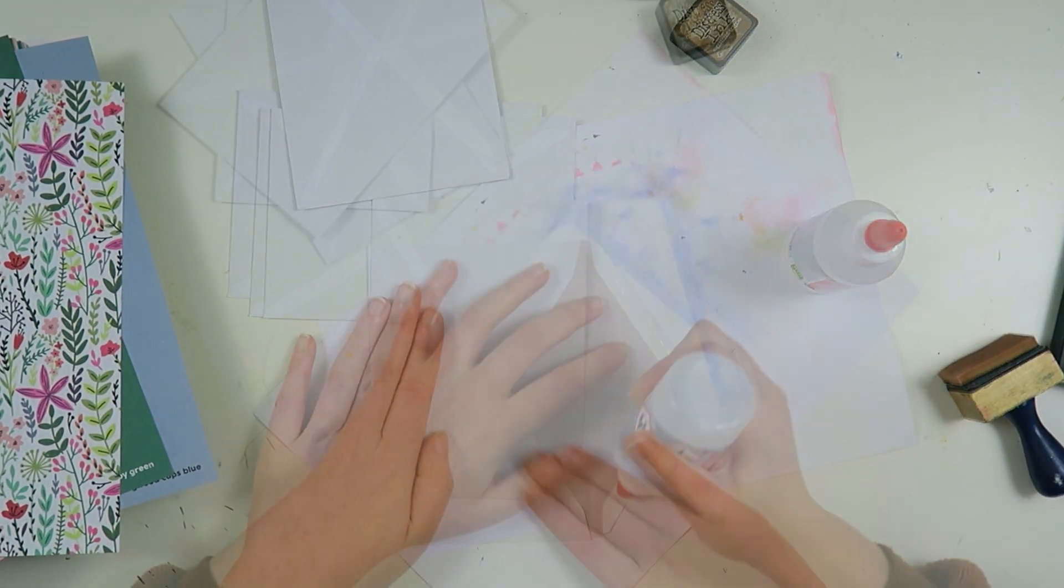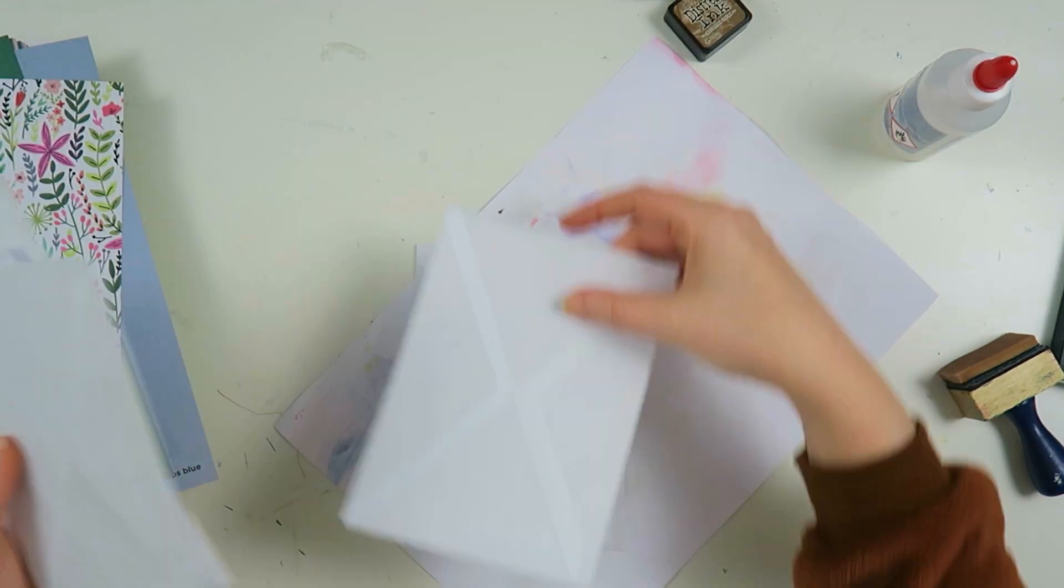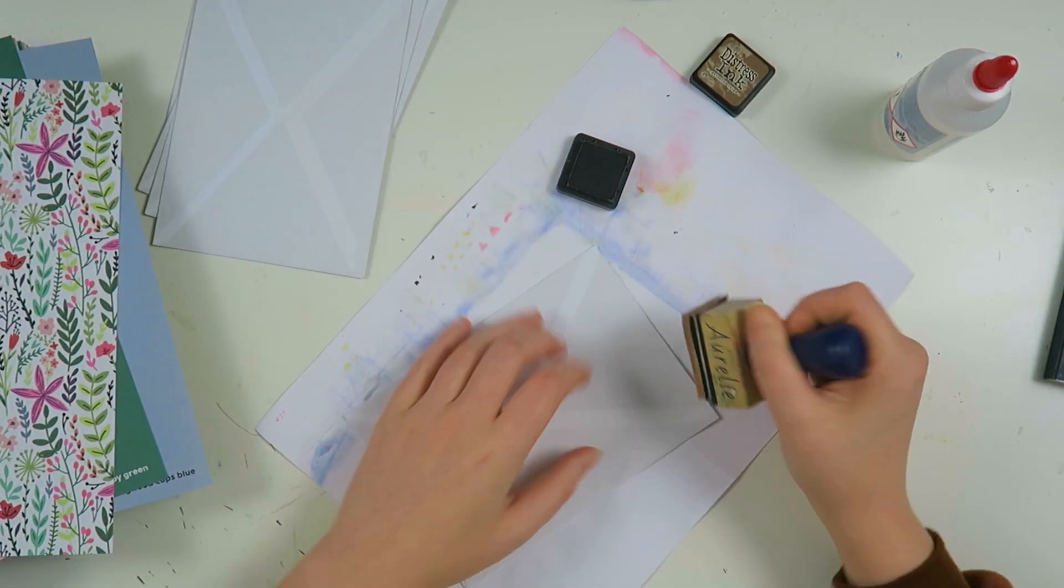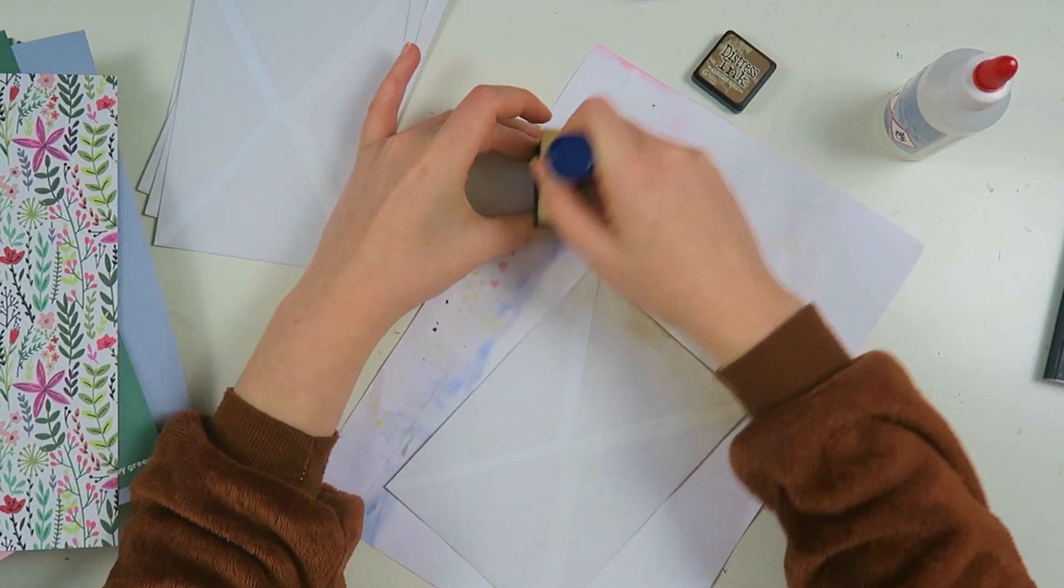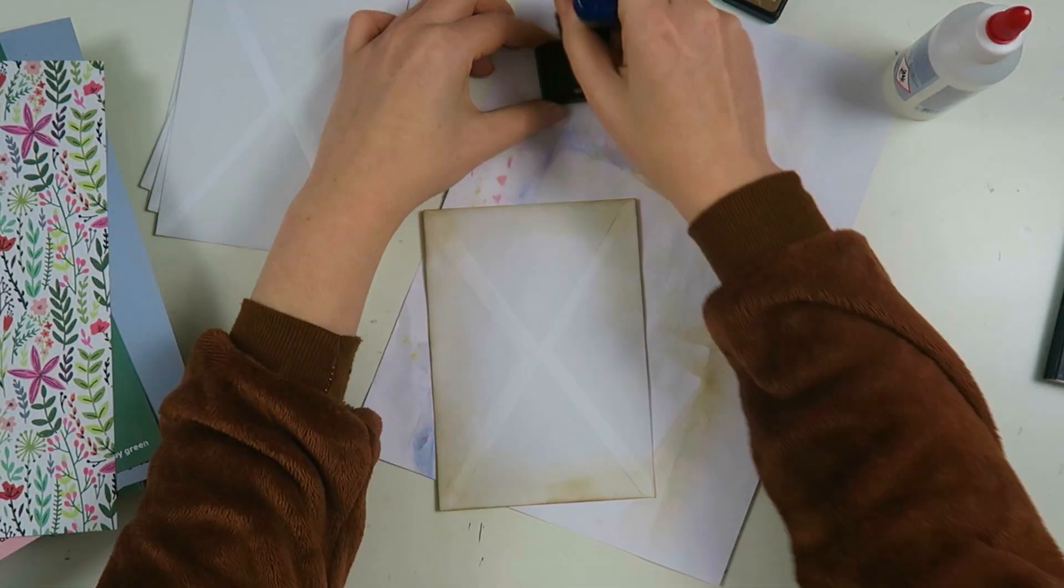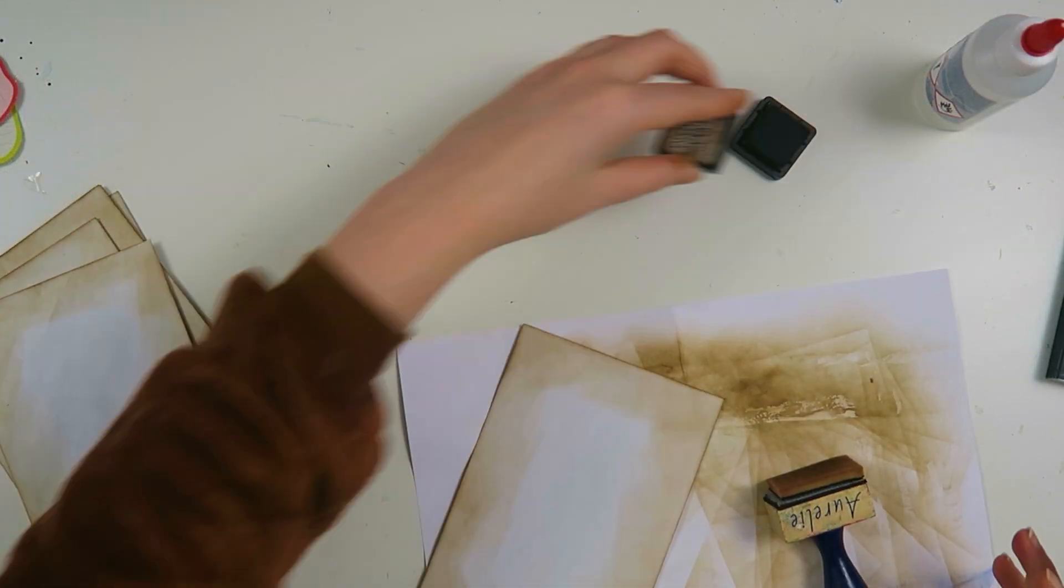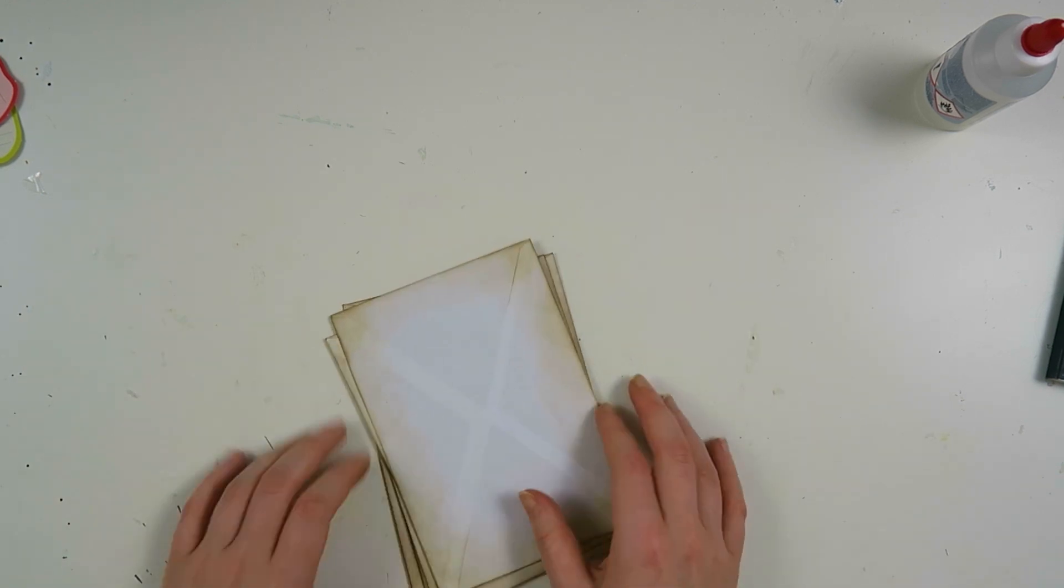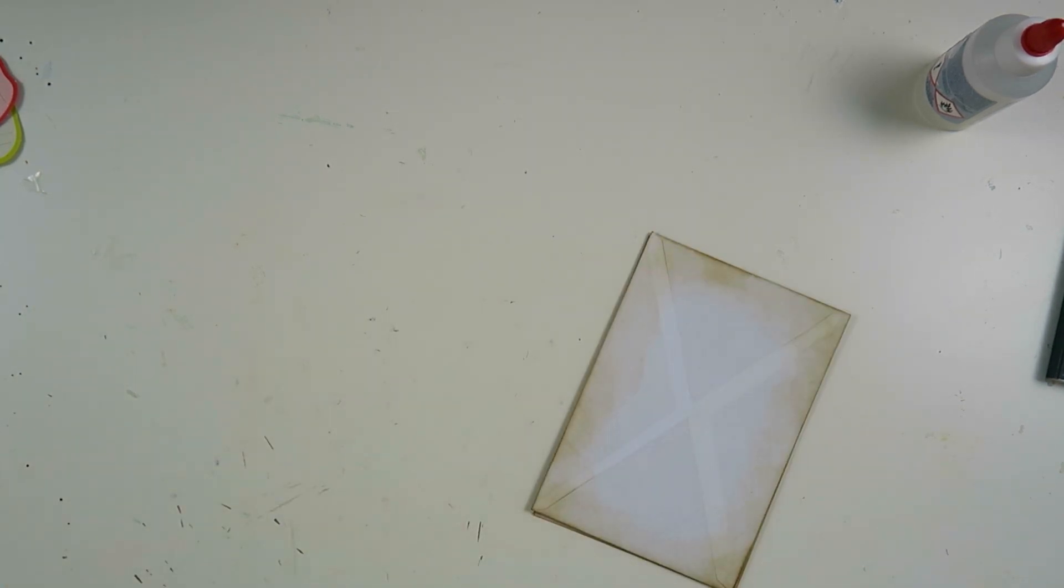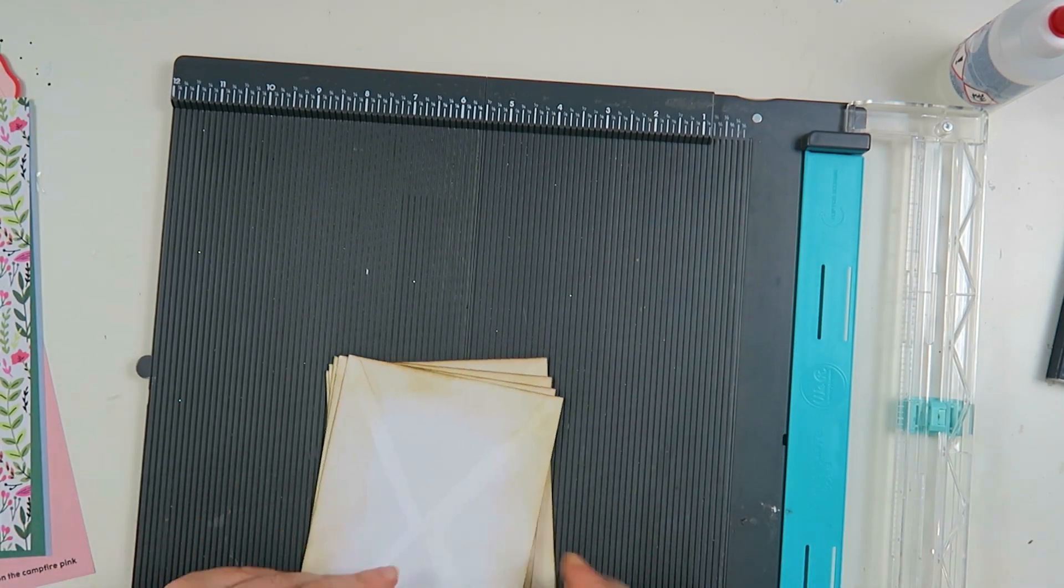Before I do anything else, I'm taking my distress ink in gather twigs and I'm going to distress up the edges. I made this accordion folder for Avia as part of my happy mail for her. I already uploaded another part where I made something mixed media for her, you can see that linked below.